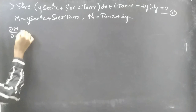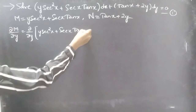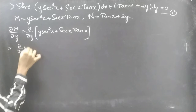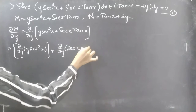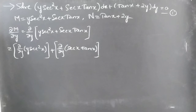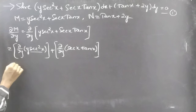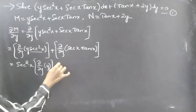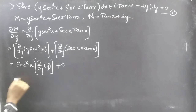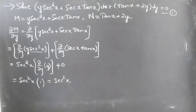I will begin with the partial derivative of M with respect to y: ∂/∂y of (y secant square x plus secant x tan x). Since we are doing the partial derivative with respect to y, we treat x as constant. Secant square x is constant in the first term, and secant x tan x is constant in the second term. So this becomes secant square x times ∂y/∂y, which equals secant square x.